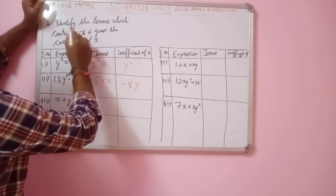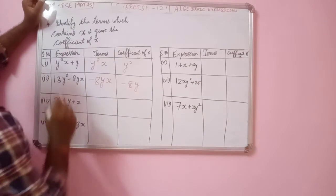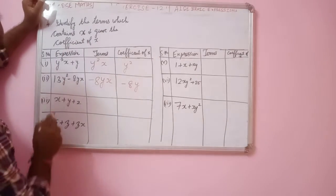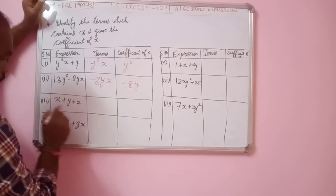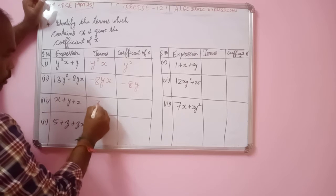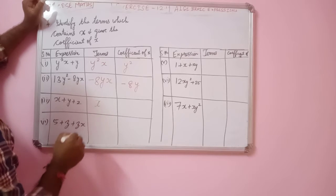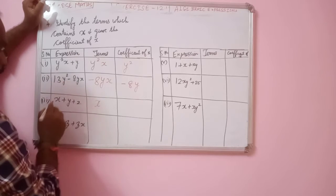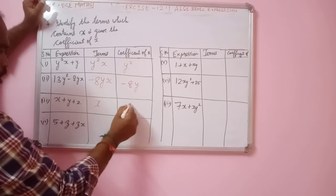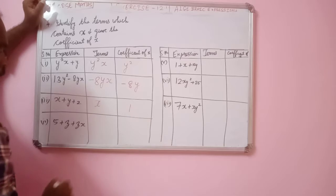Next, identify the terms which contain x. The term containing x is just x, and the coefficient of x is 1.